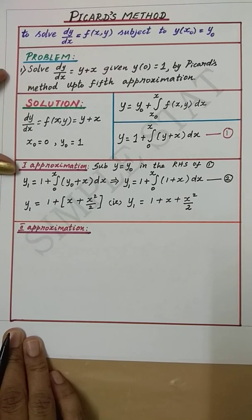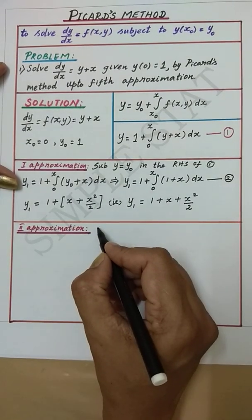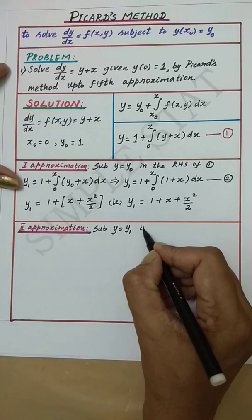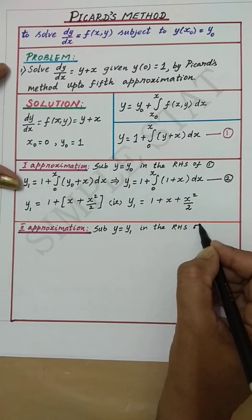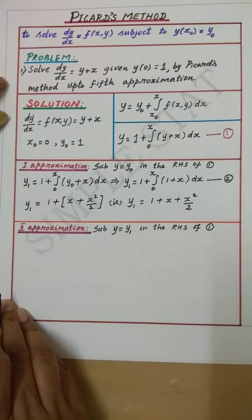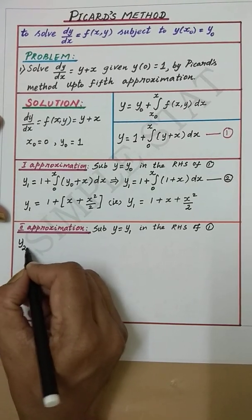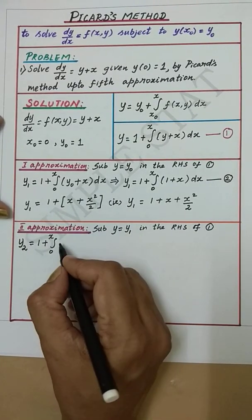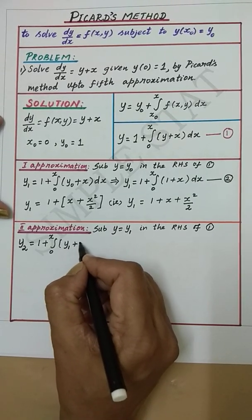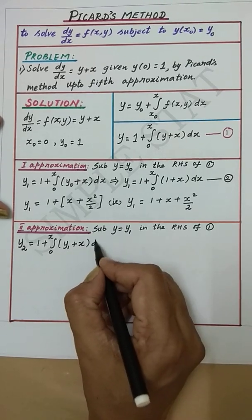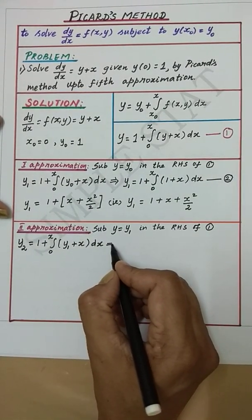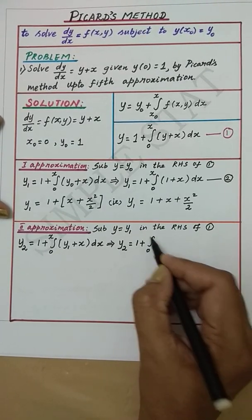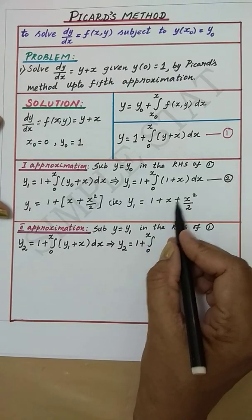Let us now proceed with the second approximation. We have to substitute y equal to y₁ in the right-hand side of equation 1, so that we get y₂ equal to 1 plus the integral over 0 to x of (y₁ plus x) dx. That is, y₂ will be 1 plus the integral over 0 to x of (1 plus x plus x²/2).